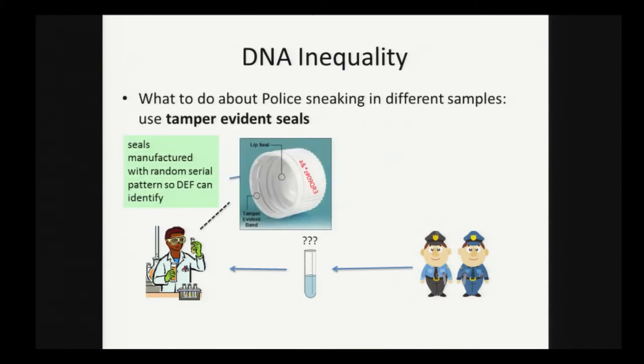What do we do about the police sneaking in different samples? Our suggestion is to use tamper-evident seals. We imagine we have these tamper-evident test tube caps. They're manufactured with a serial pattern to be identifiable, and it's important for them to be non-forgeable during the protocol. The police can't produce replicas or replace the caps that are being used without the defender knowing the difference, which is why we want them manufactured with a random serial pattern, so the police can't produce replicas before the protocol begins.